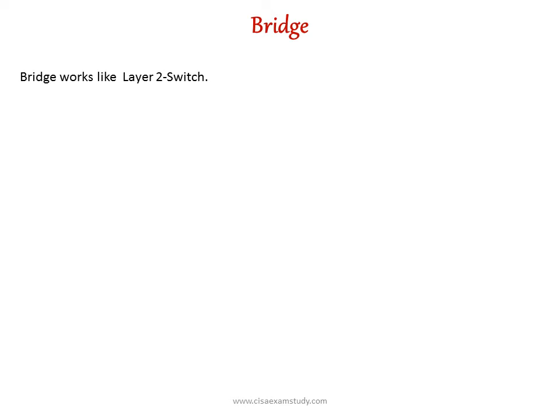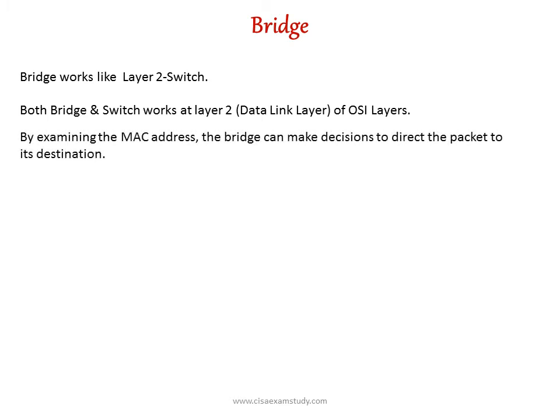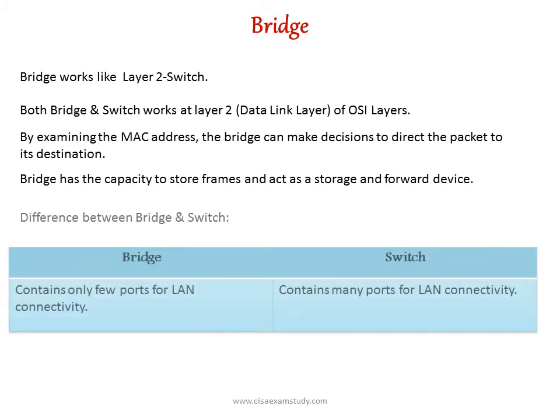Now let us understand what a bridge is. Bridges are similar to layer 2 switches. They work at the data link layer of OSI, layer 2, and work on MAC address, not IP address. They have the capacity to store frames and act as a storage and forward device. The difference between bridge and switch is that bridge contains only a few ports for LAN connectivity, whereas a switch can contain many ports for LAN connectivity.